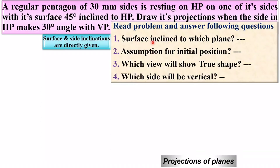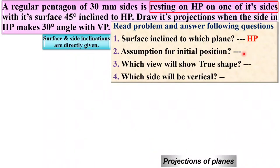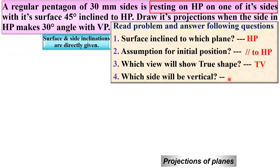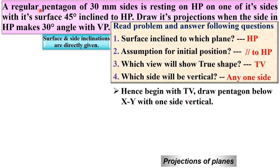Surface inclined to which plane? It is given to you: surface is 45 degrees inclined to HP. Next, assumption for initial position: it is resting on HP on one of its sides. If the side or corner is on HP, then you have to assume the plane must be parallel to HP. If the plane is parallel to HP, then the top view will show the true shape. Since it is resting on HP on one of its sides, one side must be vertical in the top view. So I should start with the top view first, and the top view is the pentagon with one side vertical.